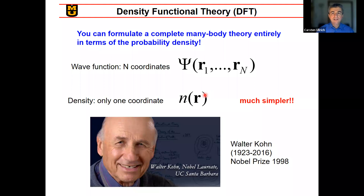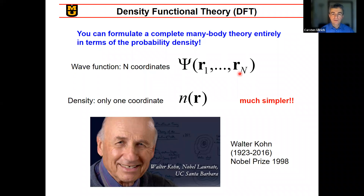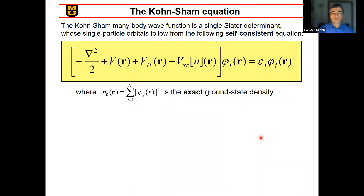Density functional theory is a reformulation of many-body theory entirely in terms of the probability density. The great thing is that the many-body wave function, which is a complicated object, is no longer the center of the theory. Instead, it's only the one-body density, which is a function of one variable and much simpler to calculate. All of this was invented by Walter Kohn.